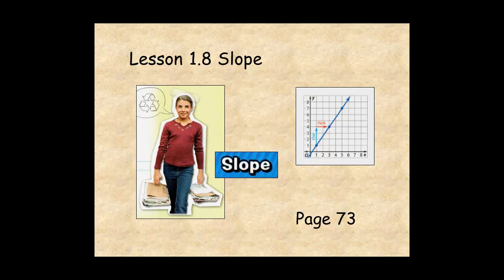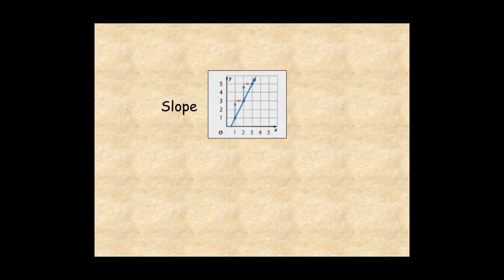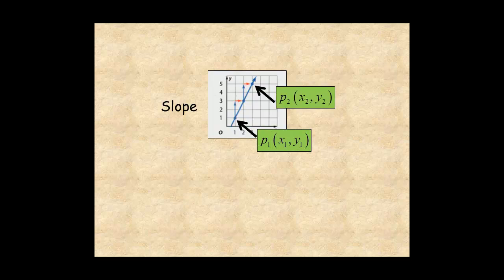This lesson shows you how to calculate the slope of a line. If one point on a line is x1, y1, and another point is x2, y2, the slope of the line is the difference in the y-coordinates divided by the difference in the x-coordinates. The slope of the line is the rate of increase of the y-values with respect to the x-values.